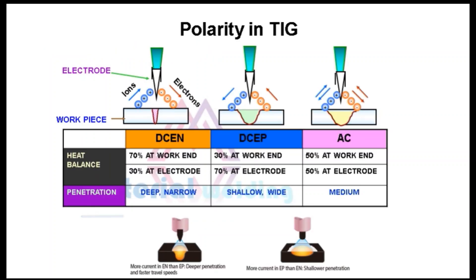Now let's understand the types of polarity used in TIG welding and their effects. As shown in the picture, three polarities can be used: 1. DCEN — direct current electrode negative; 2. DCEP — direct current electrode positive; 3. AC — alternating current. In DCEN, 70% of heat is at the workpiece and 30% on the electrode, and thus we get deep penetration. Also, less heat on the electrode end helps to increase the life of the tungsten electrode. In DCEP, 30% heat is at the workpiece and 70% on the electrode, giving shallow penetration. High heat on the electrode end decreases the life of the tungsten electrode; hence this polarity is rarely used in TIG welding.